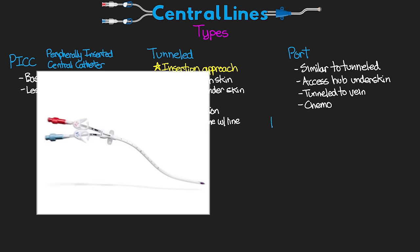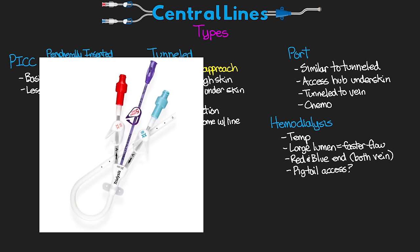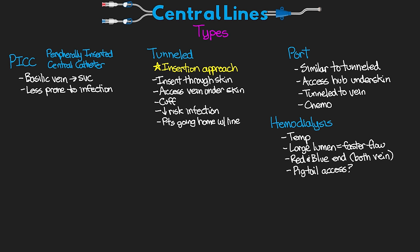Another type of central line is our hemodialysis lines, or temporary hemodialysis lines. The benefit here is that these have larger lumens which equals faster flow — we can see two to three hundred milliliters per minute or more of flow with these lines. These lines typically have a red and a blue end, although both are going into a vein. You can also have a pigtail access with one of these lines, such as a trialysis catheter, which in addition to having two ports for running dialysis or CRRT, also has an extra line to infuse medication.